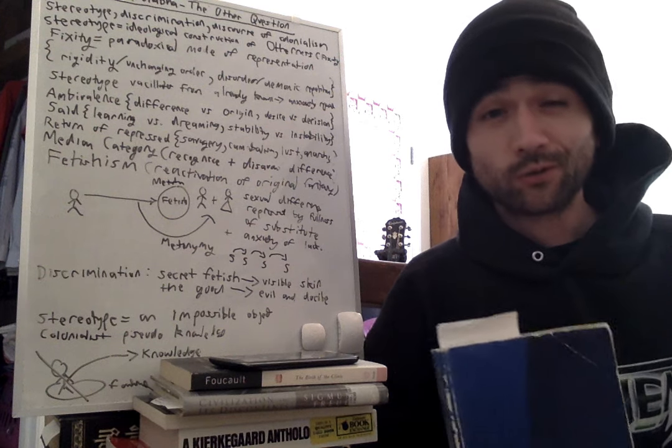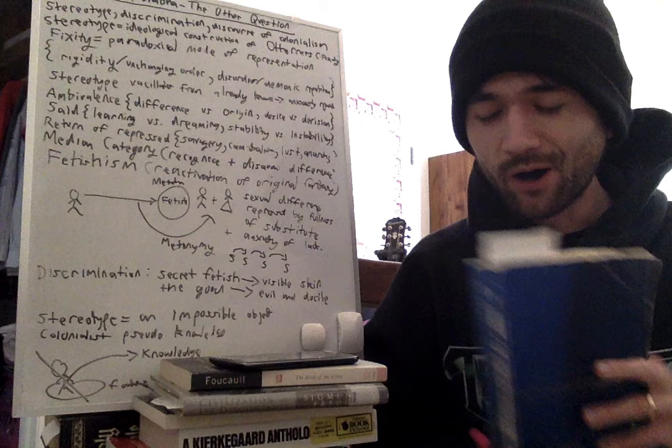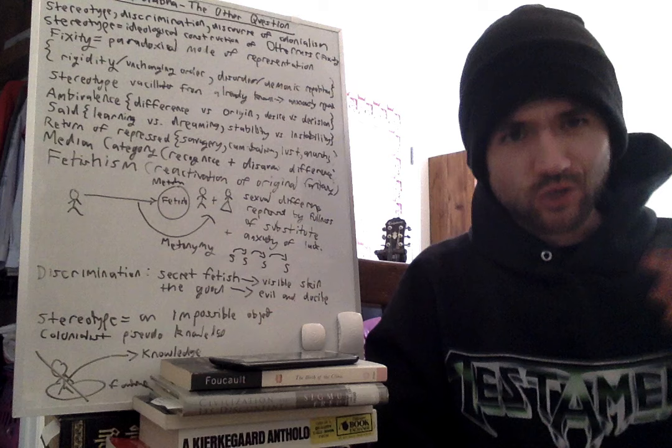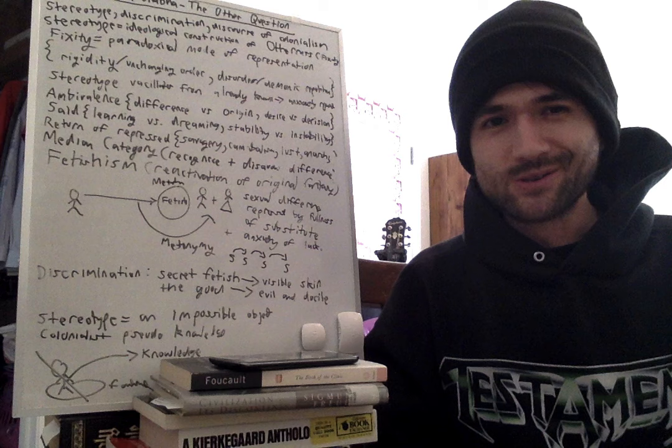Welcome to video three in the reading of The Location of Culture by Homi K. Bhabha. If you haven't seen video one, I'd recommend you go there and take a look. Like the introduction of the book, it provides some of the general ideas of Homi Bhabha's work, like hybridity, third space, mimicry, interstitiality.